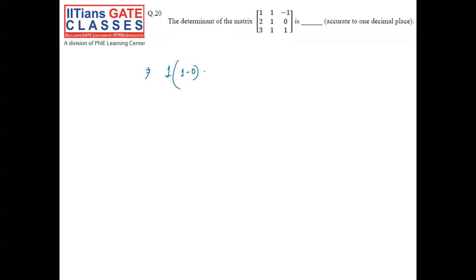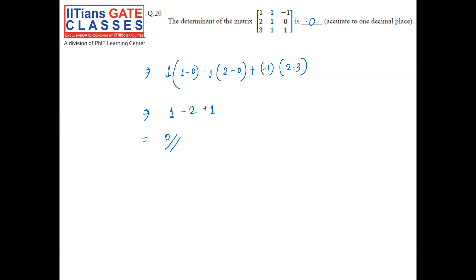Coming towards the next question: the determinant of a matrix is asked — a very simple question. We calculate: 1×(1 − 0) − 1×(2 + 3) + (−1)×(2 − 3). Simplifying: 1 − 5 + (−1×−1) = 1 − 5 + 1 = ... ultimately we get 0. So 0 is the correct answer.